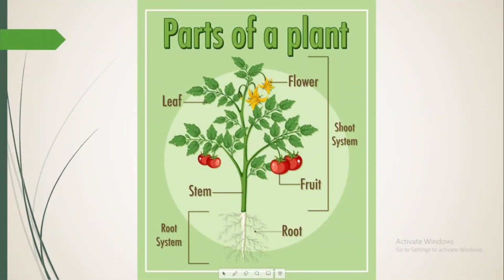Parts of a plant. A plant has two main systems: the part above the ground and the part below the ground. In the part above the ground, we have different parts like stem, leaf, flower and fruit. All these come under the shoot system. And below the ground, we have the root, which comes under the root system.